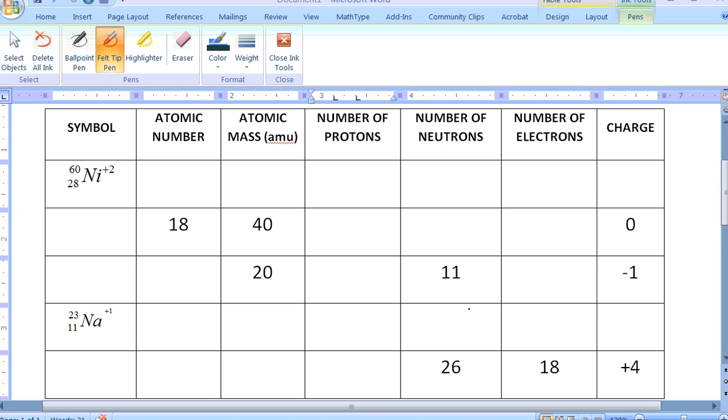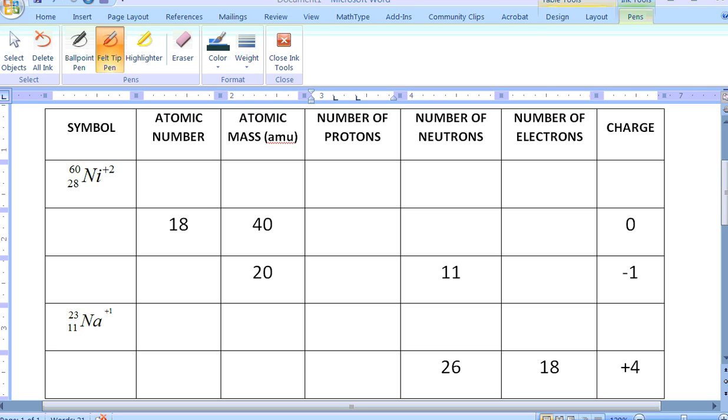Let's take a look at some practice problems here. Here I have the symbol and I want you to tell me what the atomic number is, the mass, the atomic mass, number of protons, number of neutrons, number of electrons, and the charge itself. Hopefully you recognize that there are some duplicate columns here. For example, if we look at atomic number here and number of protons, aren't those the same thing? You better believe it, they are. When we look at the atomic mass, the mass is the number of protons plus the number of neutrons. The number of electrons, depending on what the charge is, is going to tell us how many electrons we have.